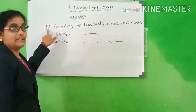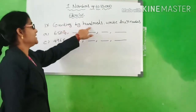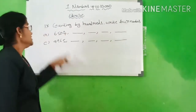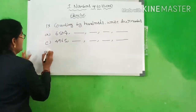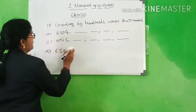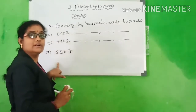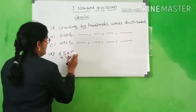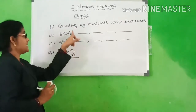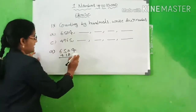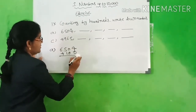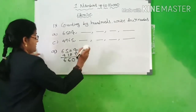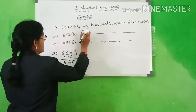Okay. 9th bit: counting by 100s, write 4 numbers. Look here — first one: 6,504. You have to count 6,504 plus 100. 4 plus 0 is 4, 0 plus 0 is 0, 5 plus 1 is 6, 6. What is the answer? 6,604.